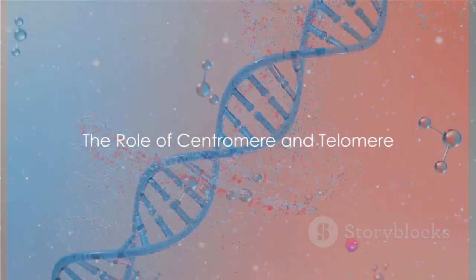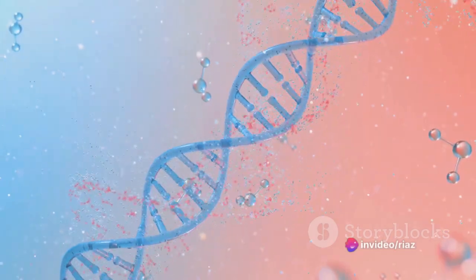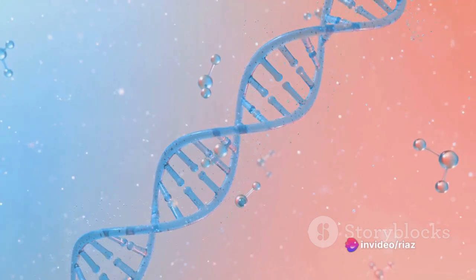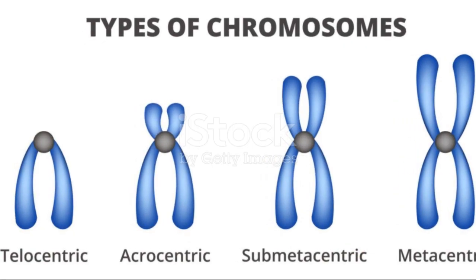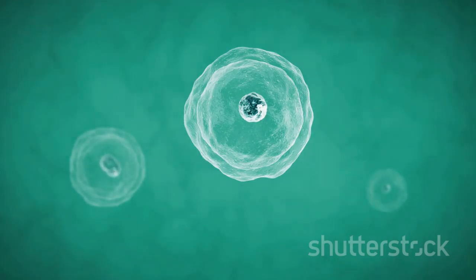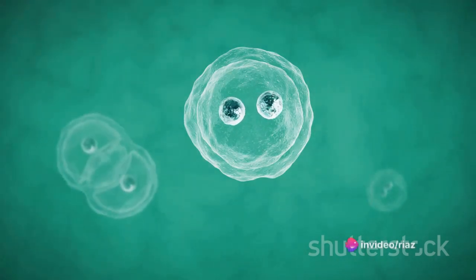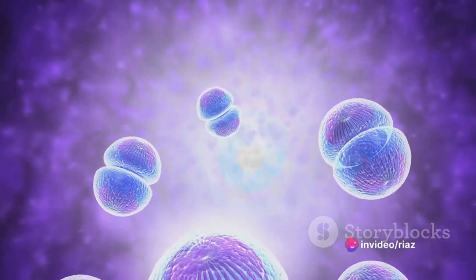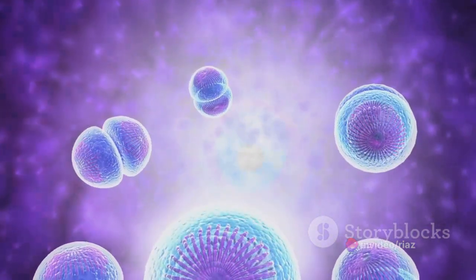At the center of the chromosome, there's a region known as the centromere. This is an essential part of the chromosome as it's the point where the two arms of the chromosome, called chromatids, are held together. The centromere also plays a critical role during cell division, serving as the attachment site for spindle fibers that pull the chromatids apart to opposite ends of the cell.